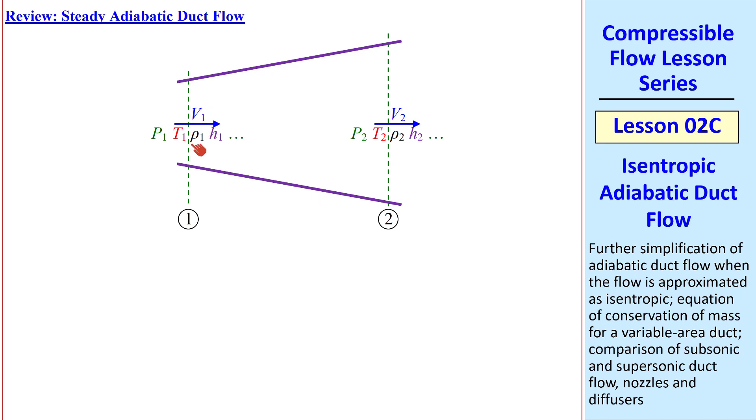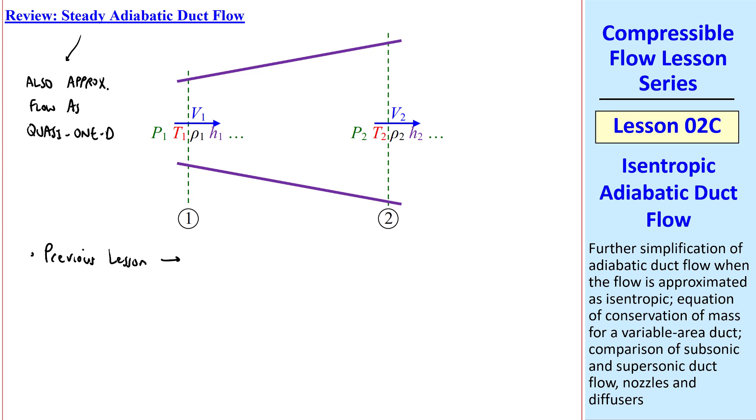We have properties at 1 and properties at 2, and we also approximate the flow as quasi one-dimensional. So this V1 is the speed across this entire duct. From the previous lesson for steady adiabatic duct flow of this type, variable area and quasi-1D, our energy equation reduced to H naught 1 equal H naught 2, or H plus V squared over 2 is a constant.